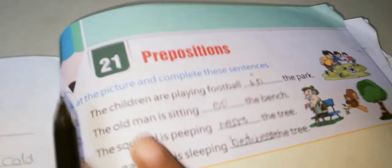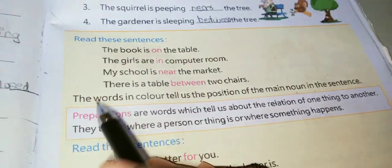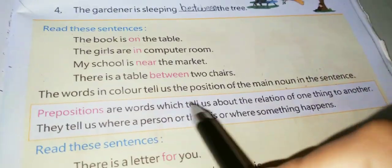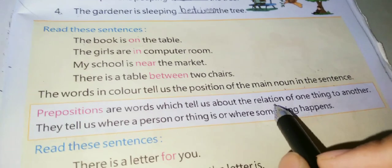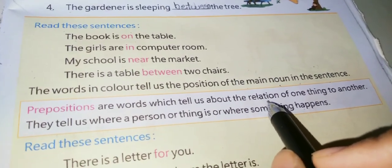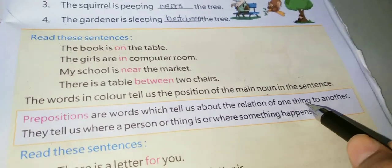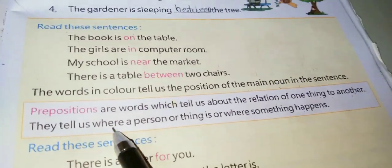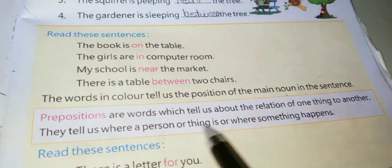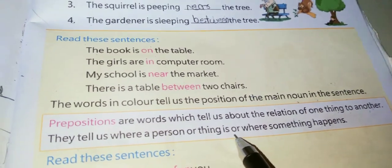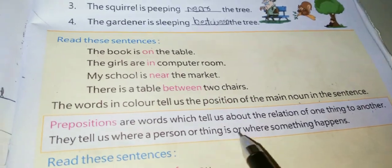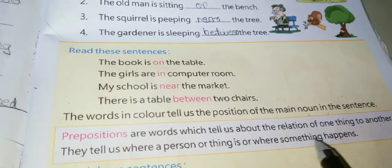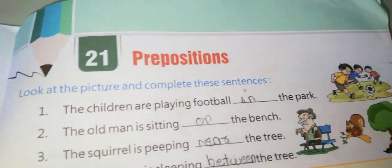So we have learned what prepositions are. Prepositions are words that tell us about the relation of one thing to another. They tell us where a person or thing is, or where something happens.